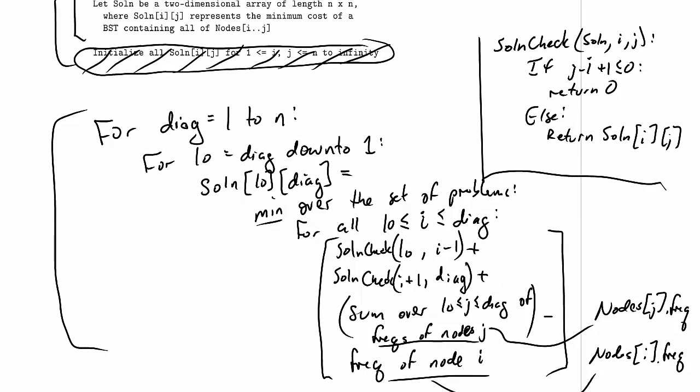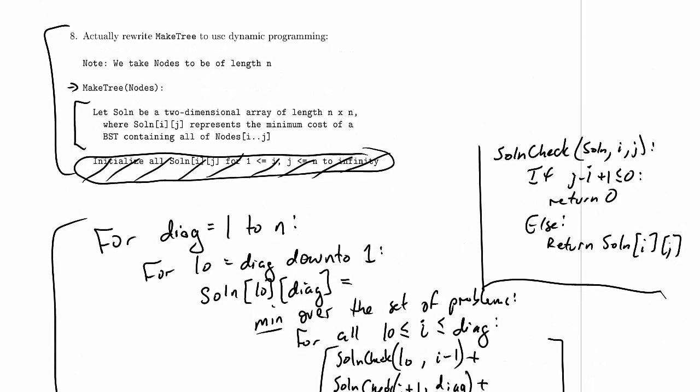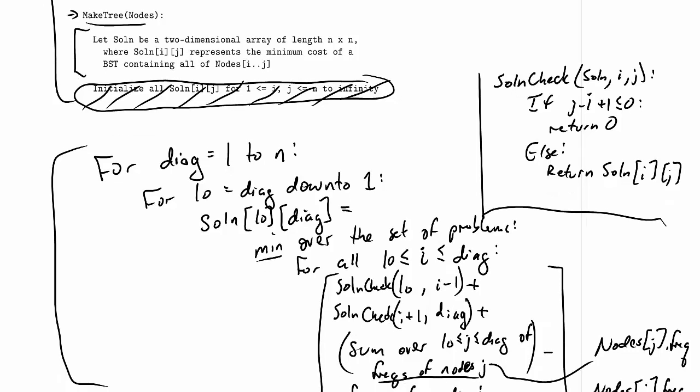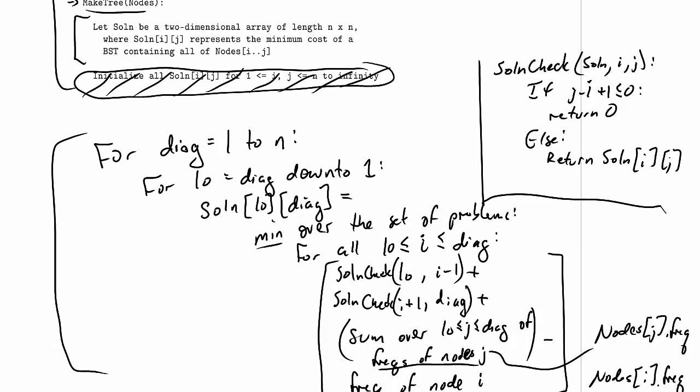We are missing one minor thing. We should actually return the solution at the end. So what is the solution for make tree nodes? All we've done is calculated the table. Which entry in the table is our final solution? Well, we want the solution for all the nodes, from 1 all the way up to n. So that's just going to be return solution brackets 1 and n.